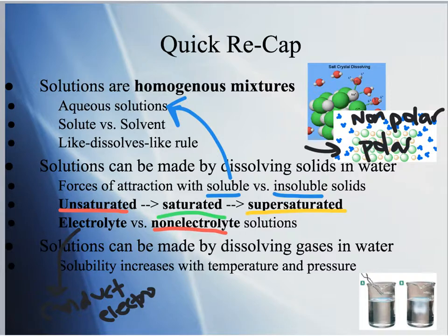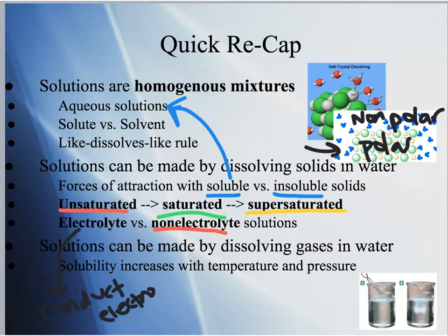A second way to make a solution is to dissolve gas in water. Think of a soda can — carbon dioxide is dissolved into the water, which we can consider a solution. The solubility of gases increases with temperature and pressure. That's how they get carbon dioxide into soda: they raise the temperature and pressurize it. That's why when you pop the top of the can, you hear the release of pressure and get some carbon dioxide release as well.